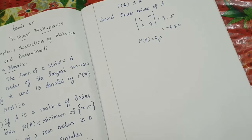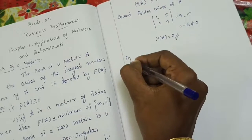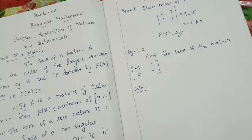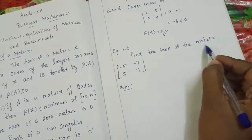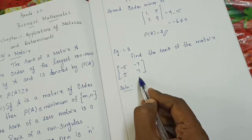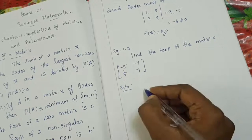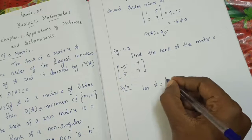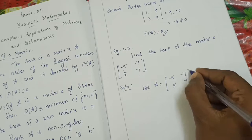Next question: example 1.2. Find the rank of the matrix minus 5, minus 7, 5, 7. Solution: let A equal to minus 5, minus 7, 5, 7. The order of A is 2 cross 2, so rho of A must be less than or equal to 2. Next, find the second order minor — the determinant of minus 5, minus 7, 5, 7.